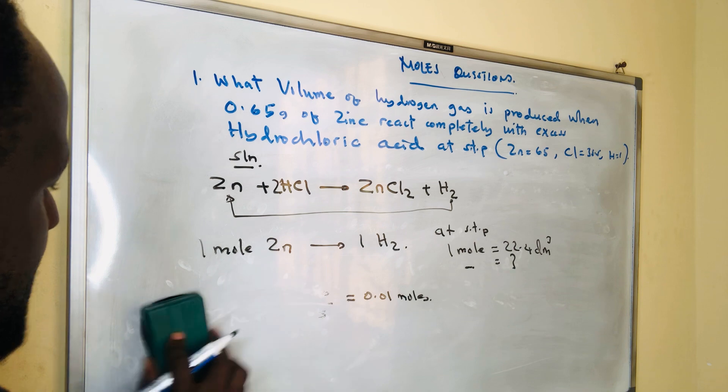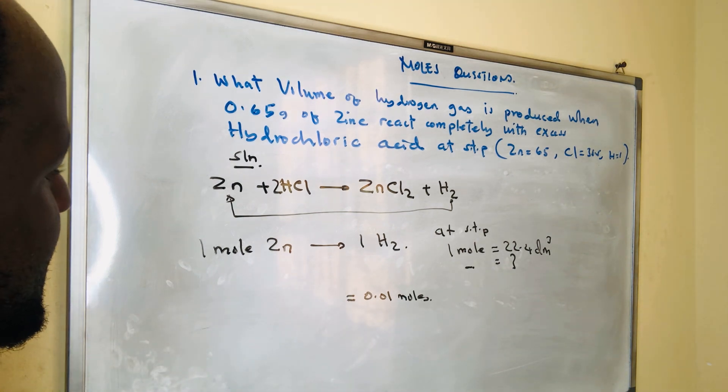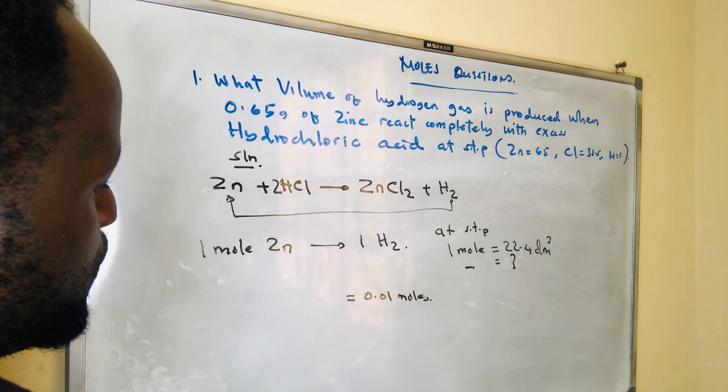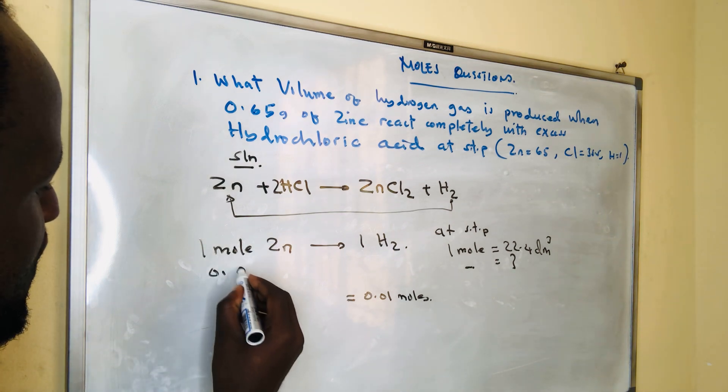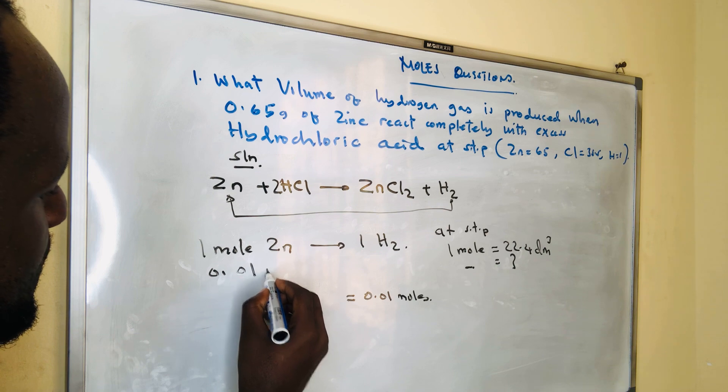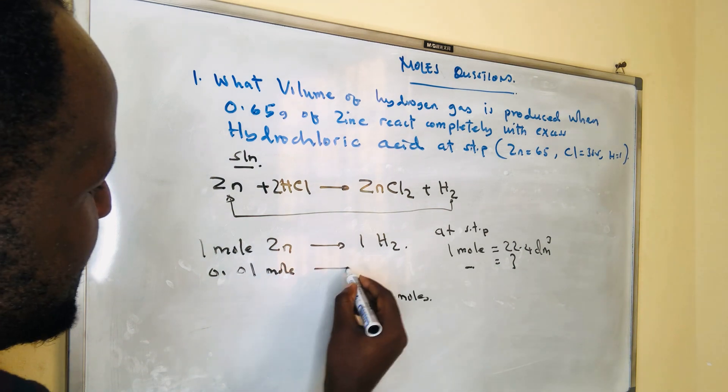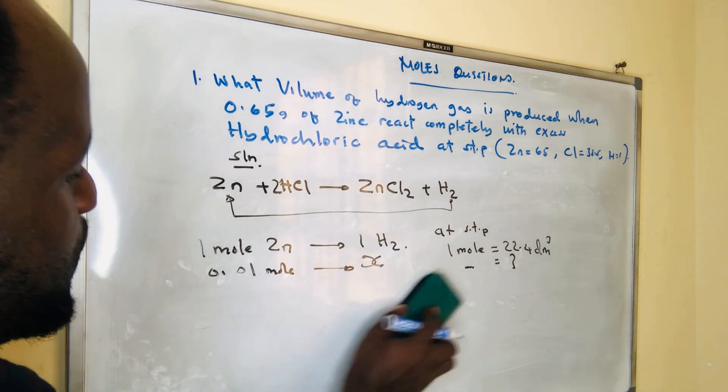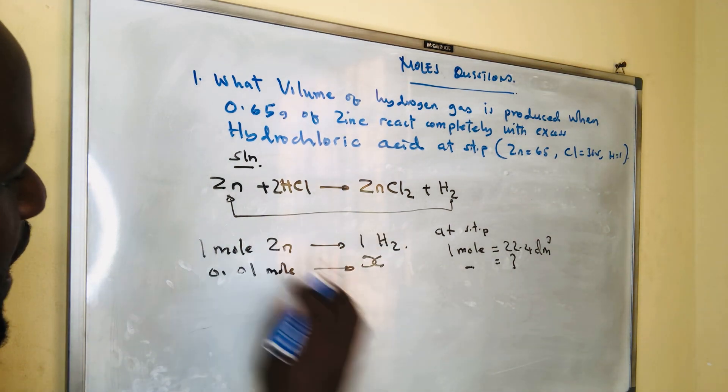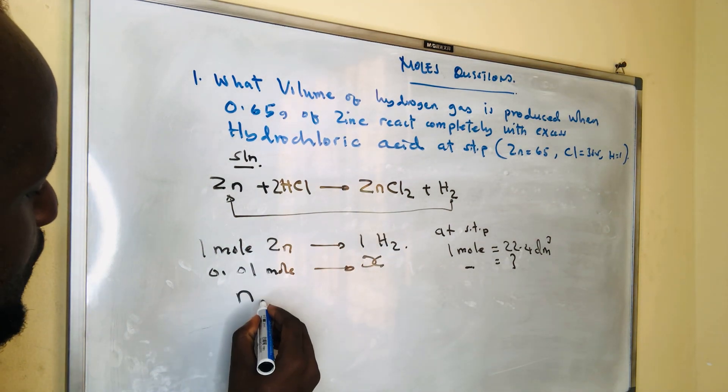Then you say: if 1 mole of zinc produced 1 mole of hydrogen gas, what if we have 0.01 moles of zinc, how many moles of hydrogen gas will be produced?